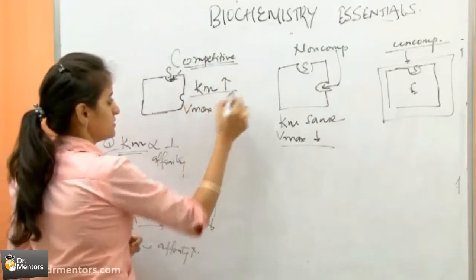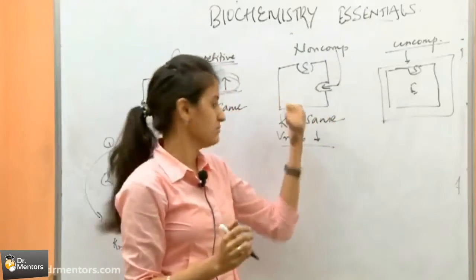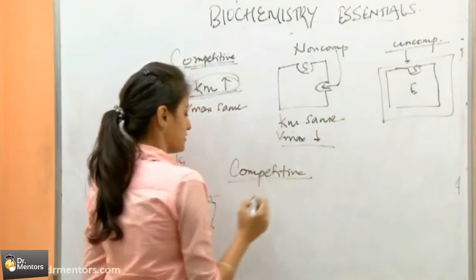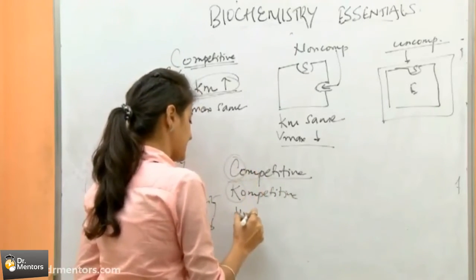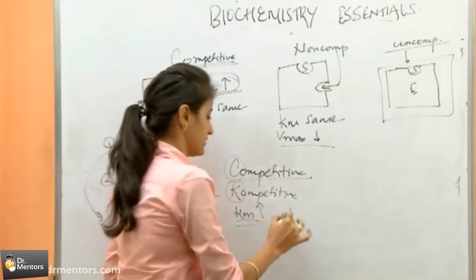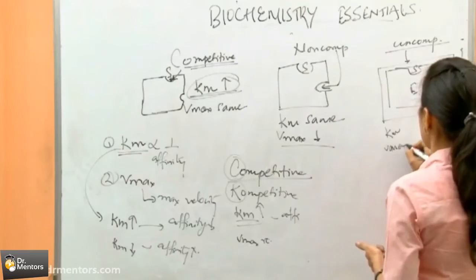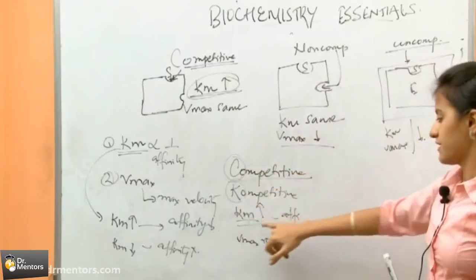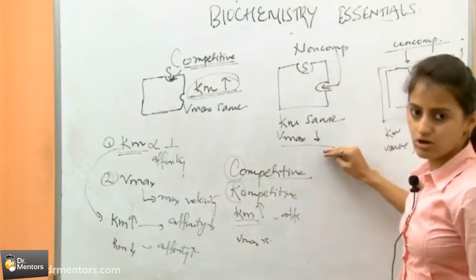So in competitive inhibition, it is the affinity which is decreased — that is, Km increases — and Vmax remains the same. In non-competitive inhibition, affinity is the same, so Km is same but Vmax decreases. To remember easily: write competitive as 'K-O' — so Km is affected, meaning Km increases and Vmax is same. In uncompetitive inhibition, both Km and Vmax decrease.